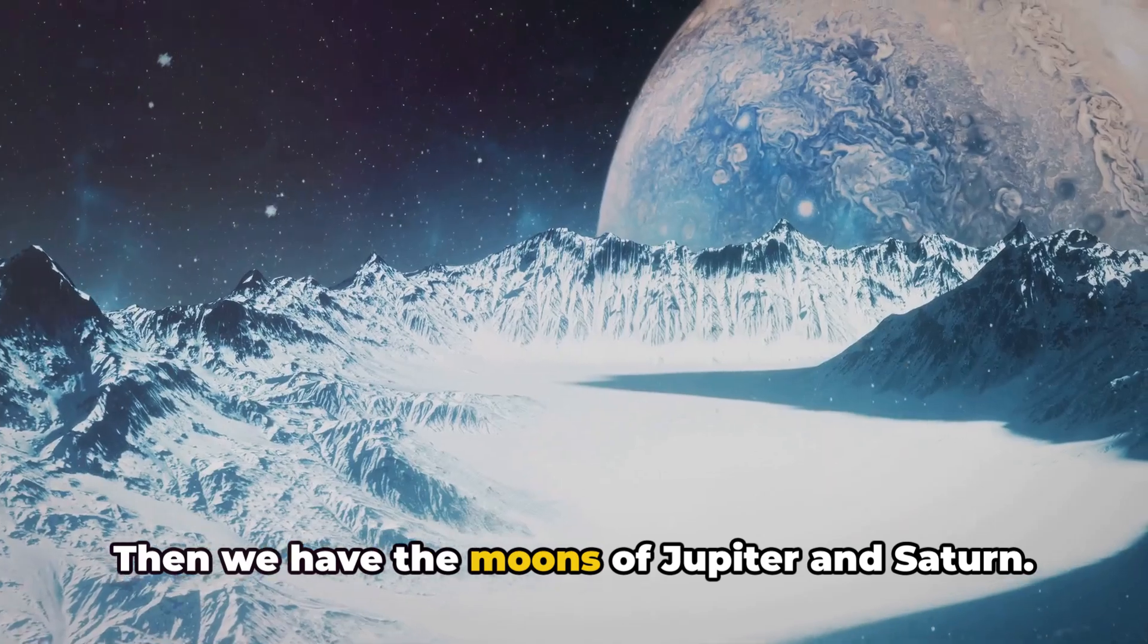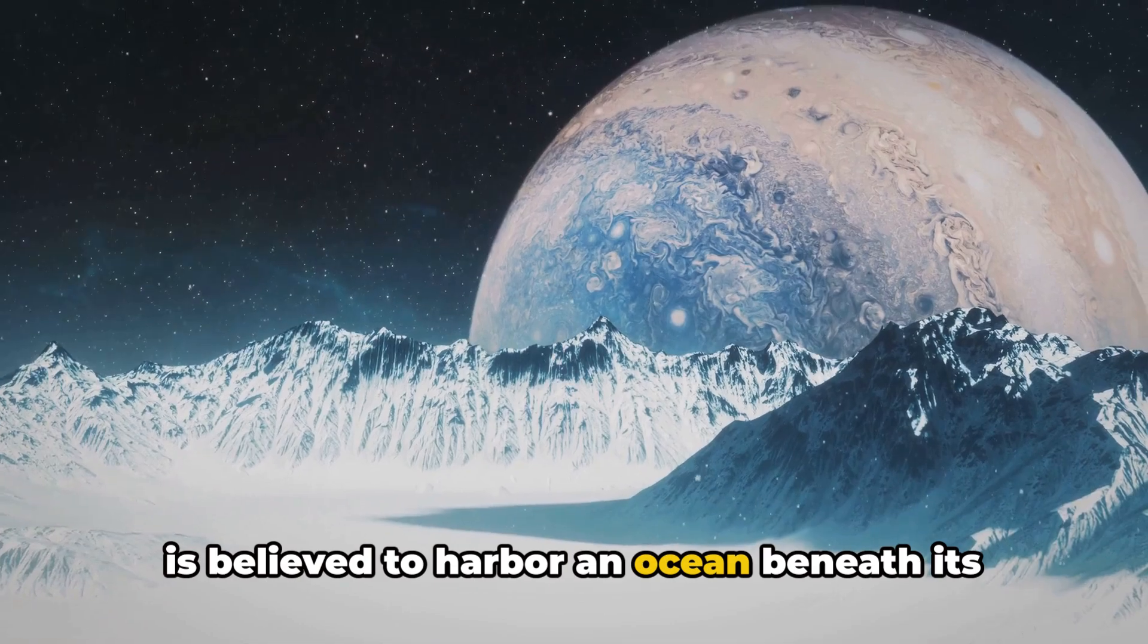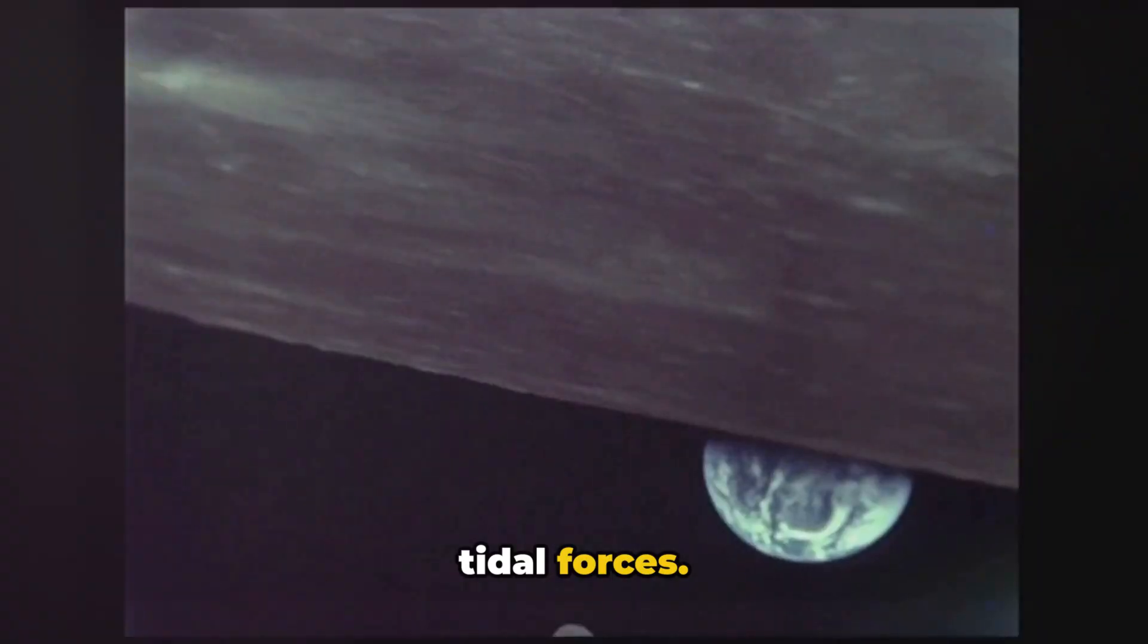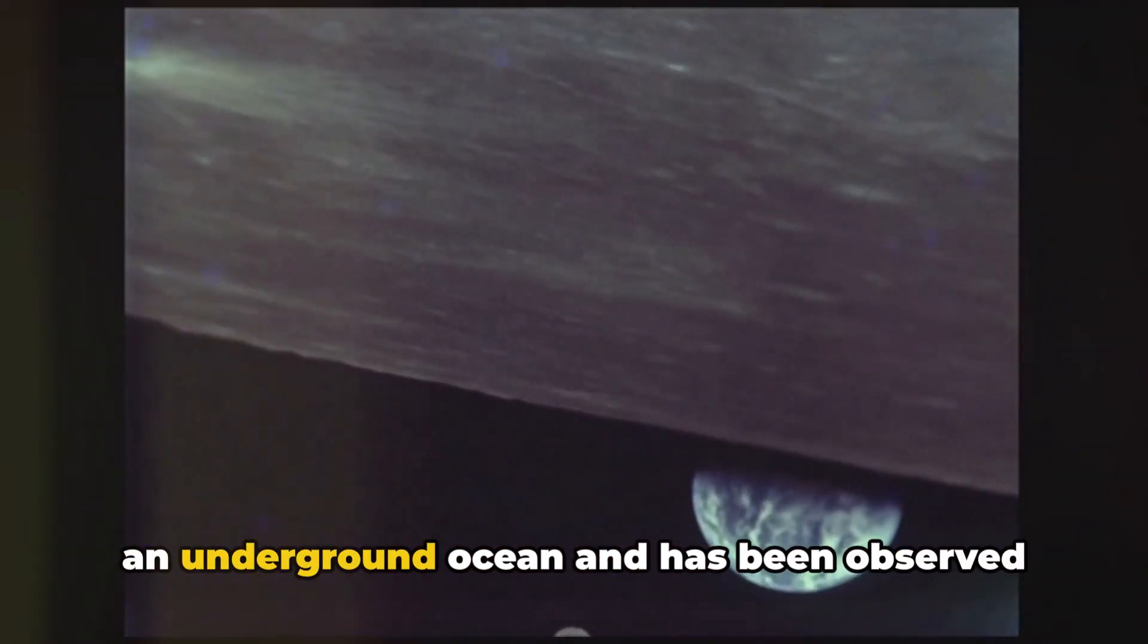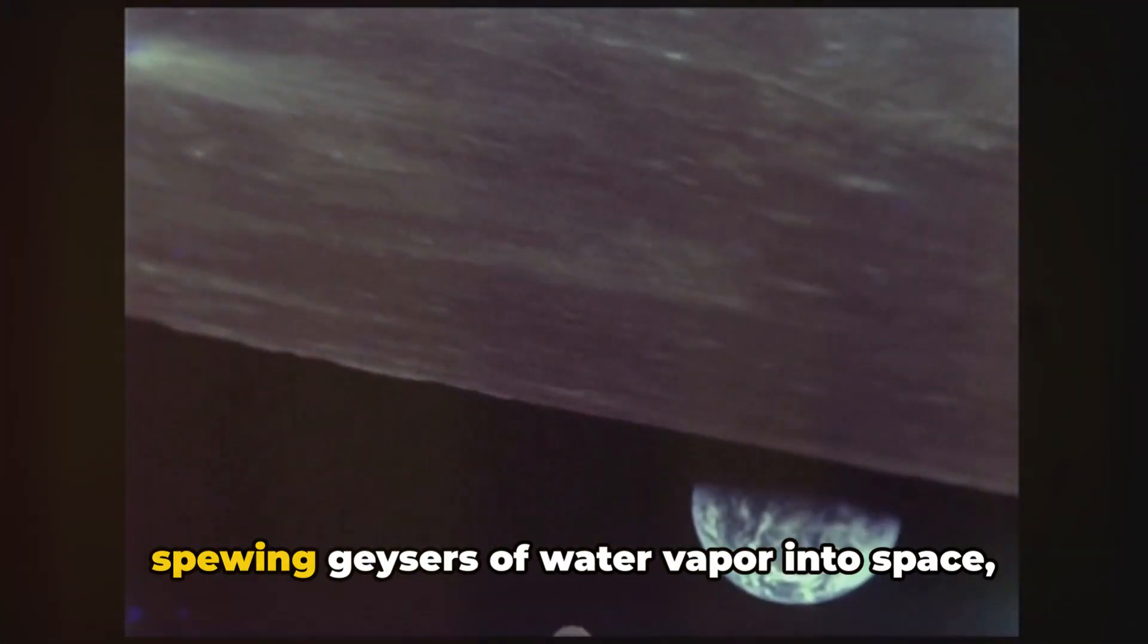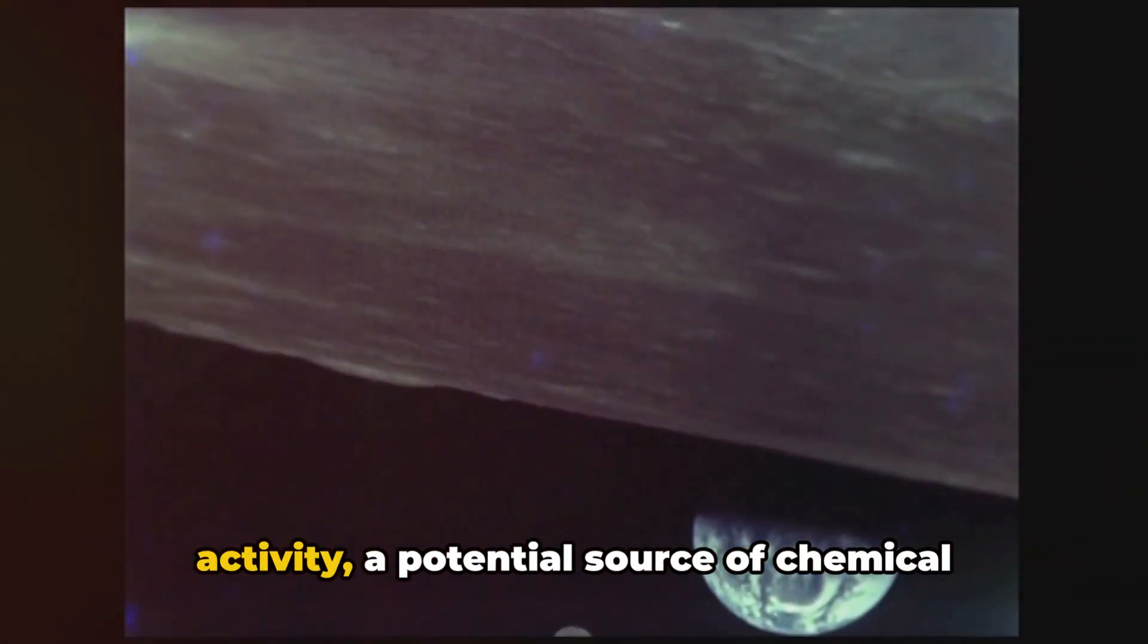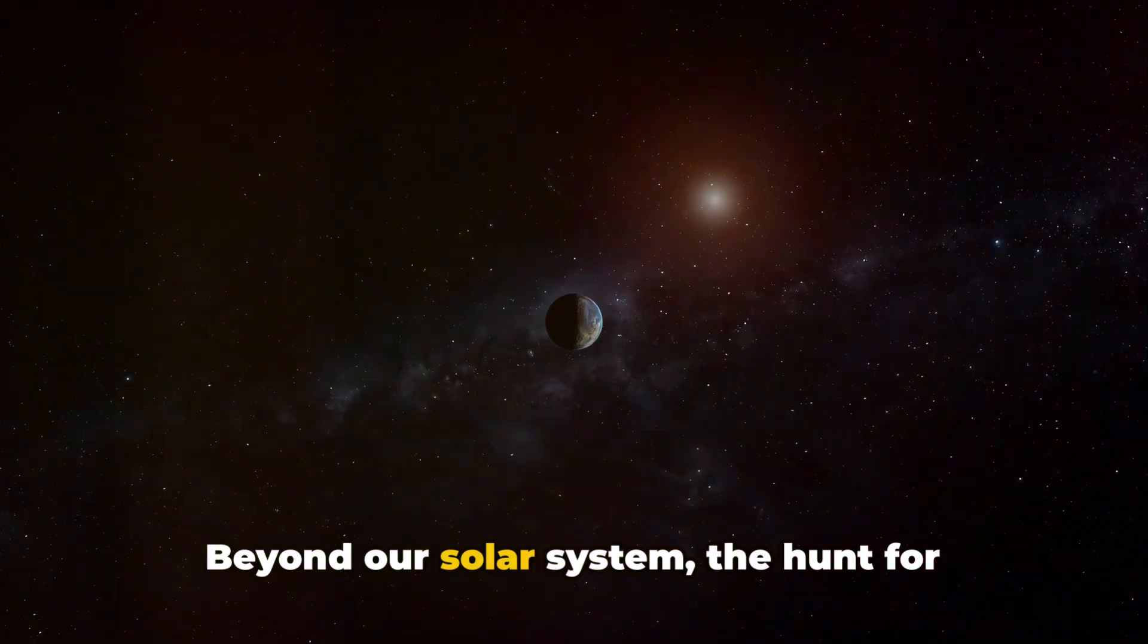Then we have the moons of Jupiter and Saturn. Europa, one of Jupiter's largest moons, is believed to harbor an ocean beneath its icy surface, heated by the moon's internal tidal forces. Saturn's moon Enceladus also possesses an underground ocean and has been observed spewing geysers of water vapor into space, indicating the presence of hydrothermal activity, a potential source of chemical energy for life.